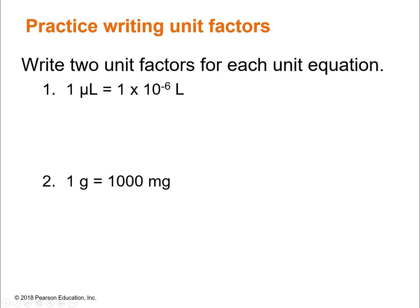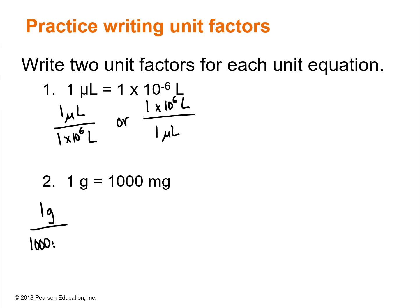You can always write two unit factors per unit equation — just flip it and write the reciprocal. For practice, write out the two unit factors from each unit equation. For example: one microliter over 1×10⁶ liters, then flip it — liters on top, microliter on the bottom. For the second one: one gram over 1,000 milligrams, then the reciprocal — 1,000 milligrams on top, one gram on the bottom.